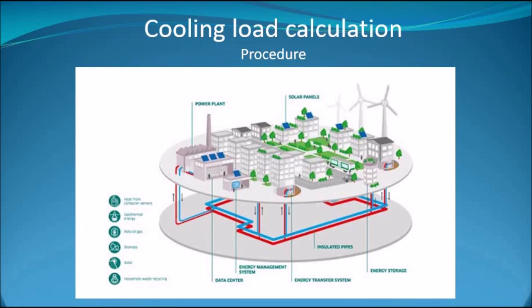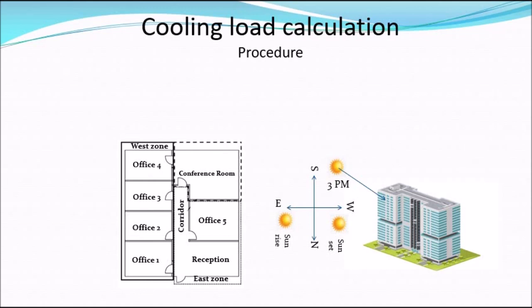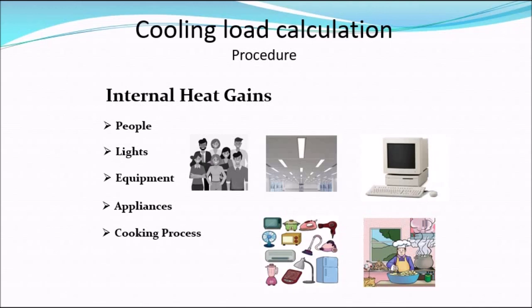We primarily need to obtain the building characteristics such as size, color, shape, location, and orientation — north, south, east, or west. If the building zone is exposed to direct sunlight, the heat transfer will be higher. This is an office building with windows facing east and west, so the cooling load calculation for each orientation will be different.